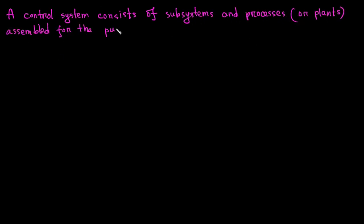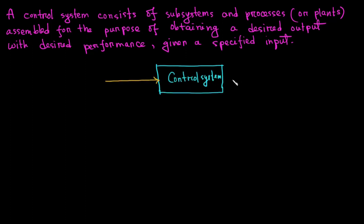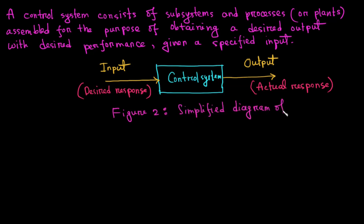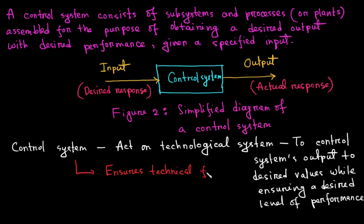Now, I like to give you an elaborate definition of a control system. A control system consists of subsystems and processes or plants assembled for the purpose of obtaining a desired output with desired performance given a specified input. Let's look at a control system in its simplest form. Here, input represents the desired response which is our expected output and the output is the actual response which is what we will actually get as an output from the system. Control is basically concerned with finding a technically, environmentally and commercially feasible way of acting on a technological system to control its output to desired values while ensuring a desired level of performance.